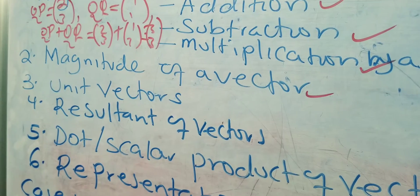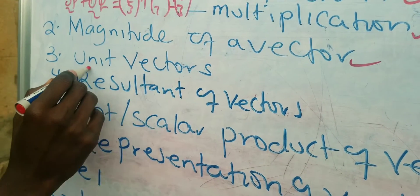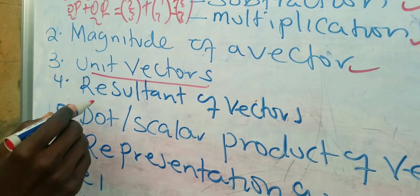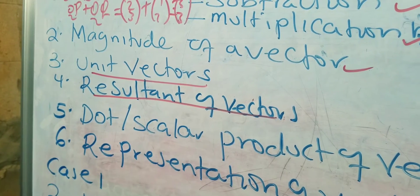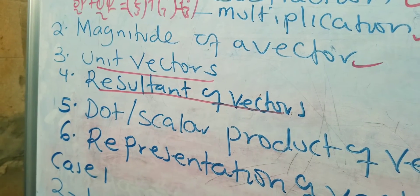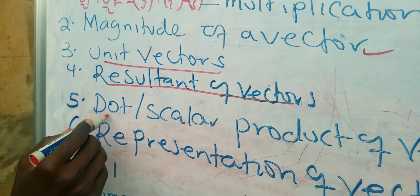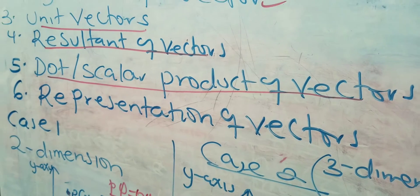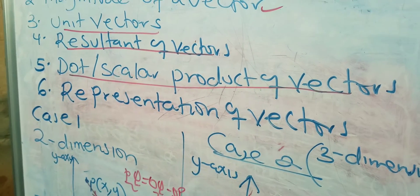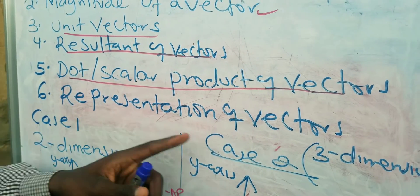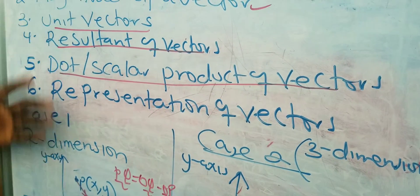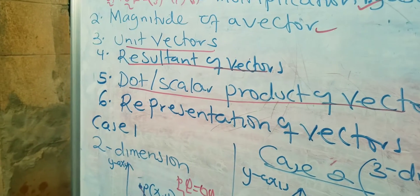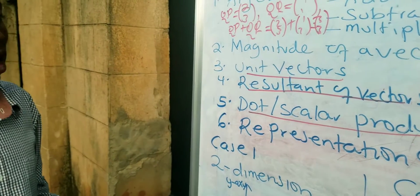A-level brings us to what we call unit vectors, and also introduces the term resultant of vectors. We go ahead and look at the dot product or scalar product of vectors, and the representation of vectors in three dimensions. That is what our unit today is going to be covering.